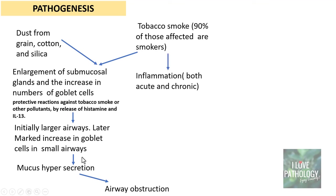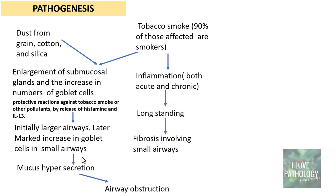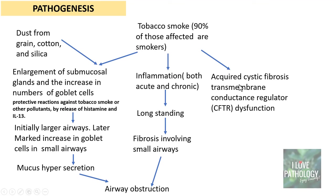Smoking also results in inflammation, which can be both acute or chronic. In long-standing cases this can result in fibrosis of smaller airways, leading to airway obstruction. Smoking also results in acquired cystic fibrosis transmembrane conductance regulator dysfunction — CFTR dysfunction.